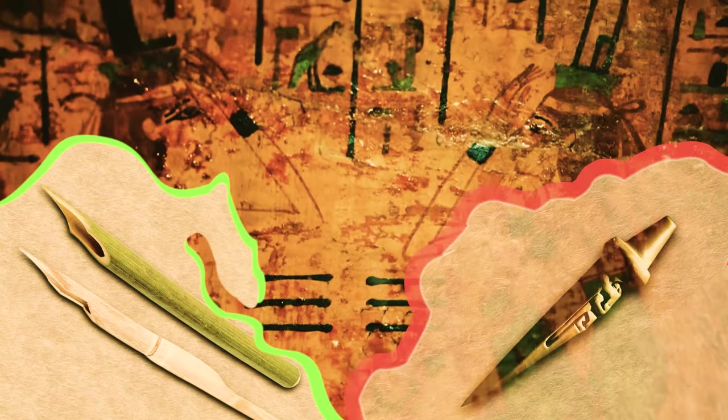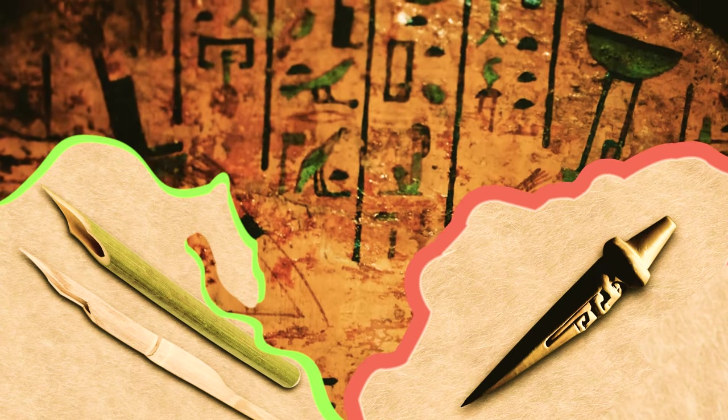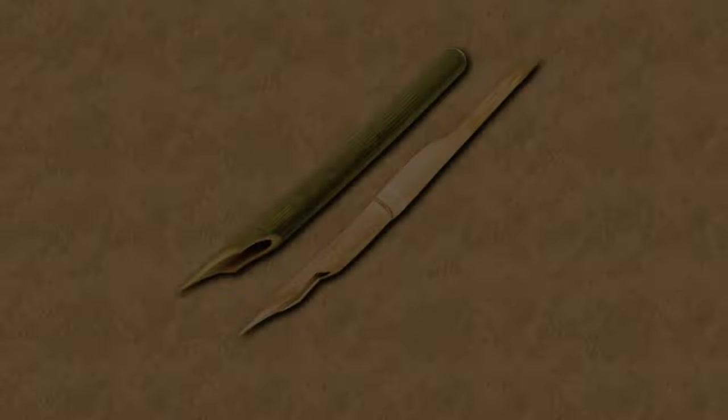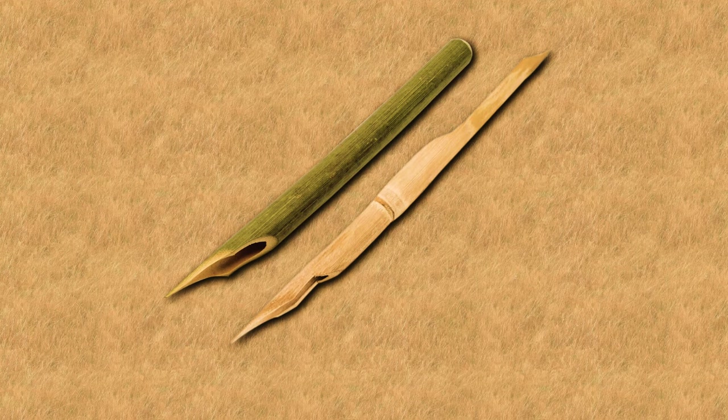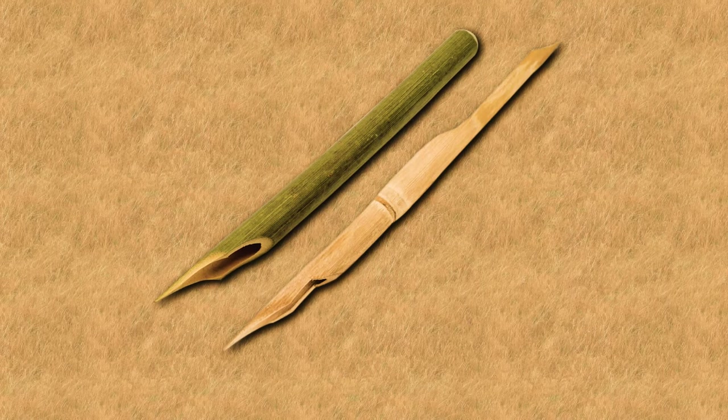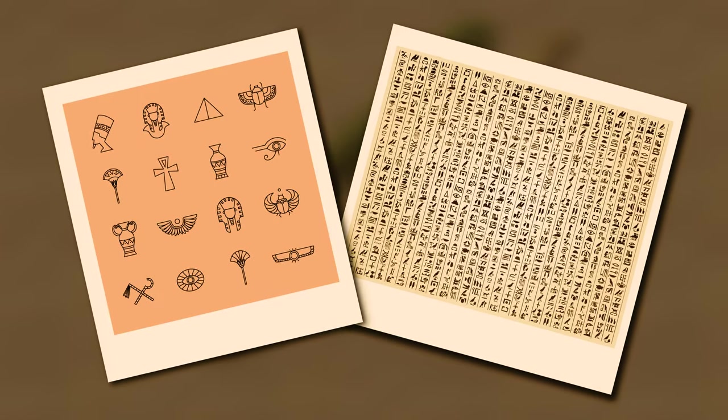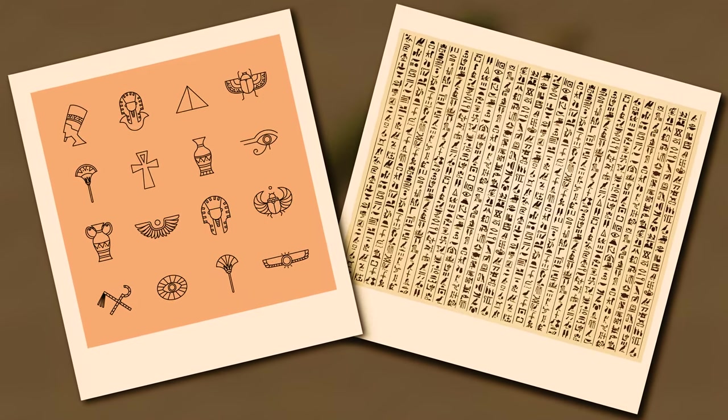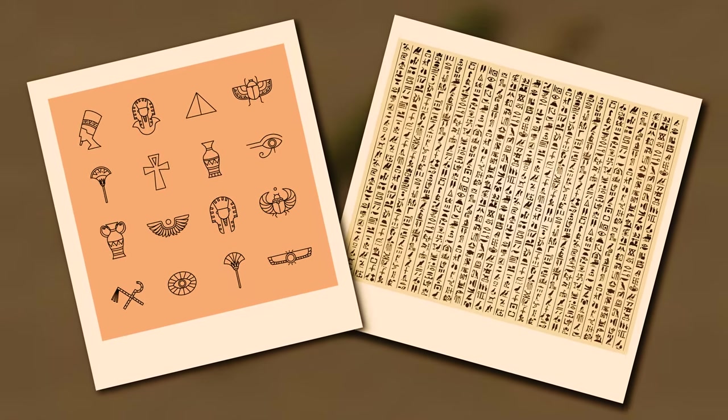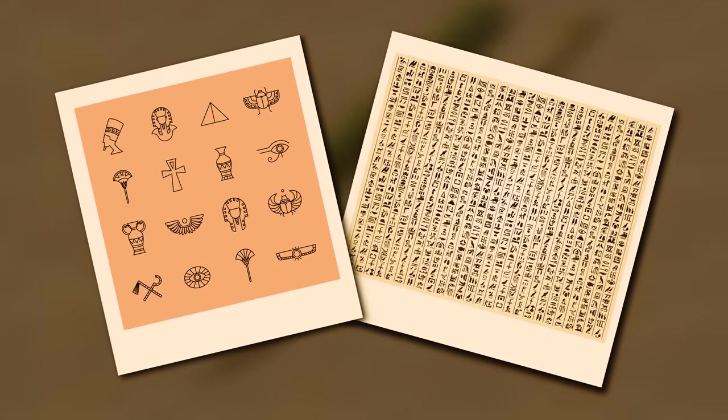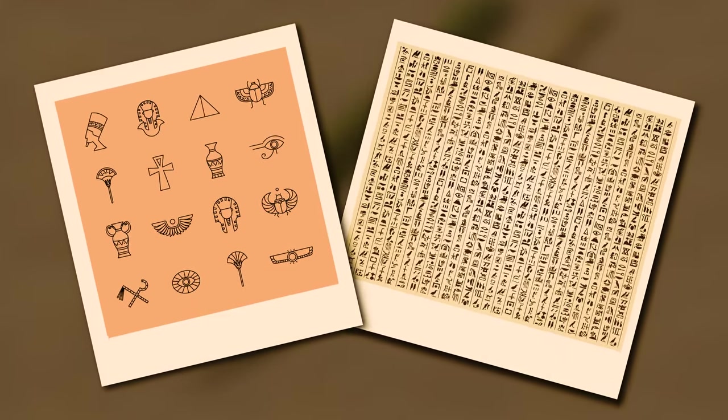Hieroglyphics were an essential part of Egyptian culture, and the calamus allowed for a level of detail that the Sumerian stylus couldn't quite match. The calamus remained an important tool for writing in Egypt for thousands of years, and it was used for everything from writing letters to recording religious texts. Its versatility and precision allowed scribes to create beautiful and complex works of art that continue to fascinate people today.